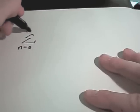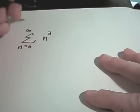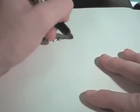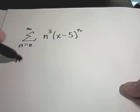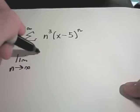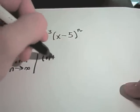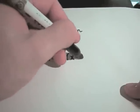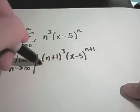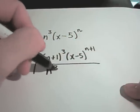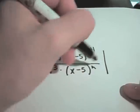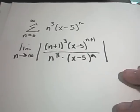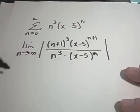Let's do one more example. Suppose we have the series from n equals 0 to infinity of n cubed times x minus 5 raised to the n power. We use the ratio test: the limit as n goes to infinity — everywhere there's an n, replace it with n plus 1. Since it's not a fraction, we divide by the original term, n cubed times x minus 5 to the n. Now I'll simplify.